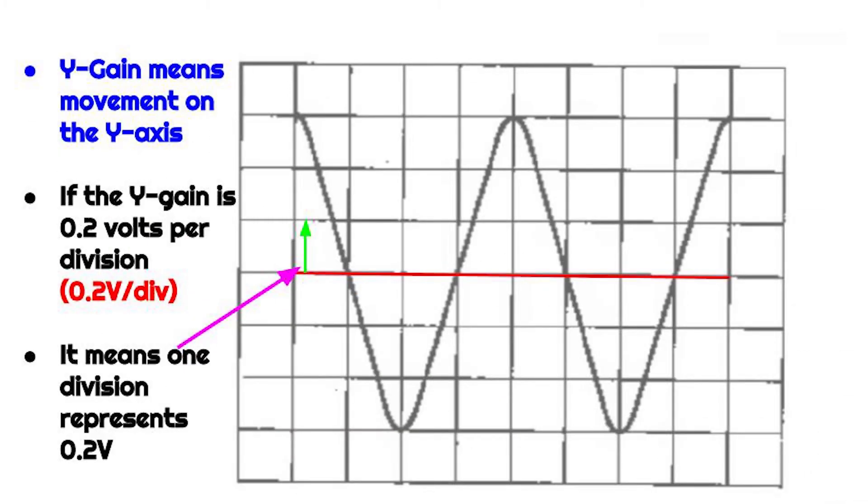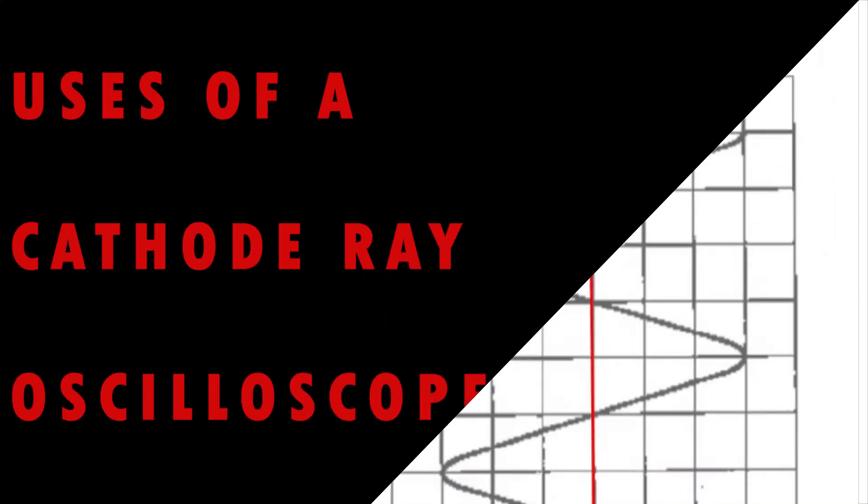The Y gain tells you how many volts each division represents. Y gain simply means movement on the Y direction. If for instance the Y gain is 0.2 volts per division, it simply means that each division represents 0.2 volts. After those two important tips, let us now discuss the uses of the cathode ray oscilloscope.